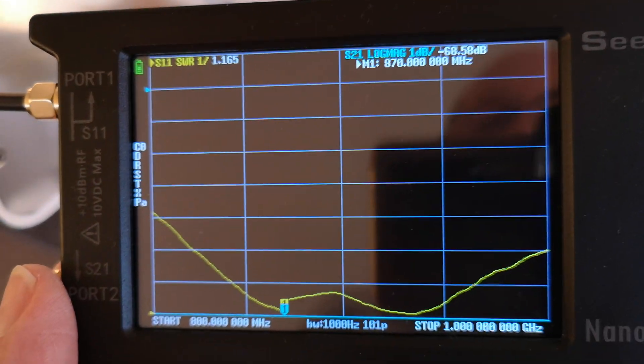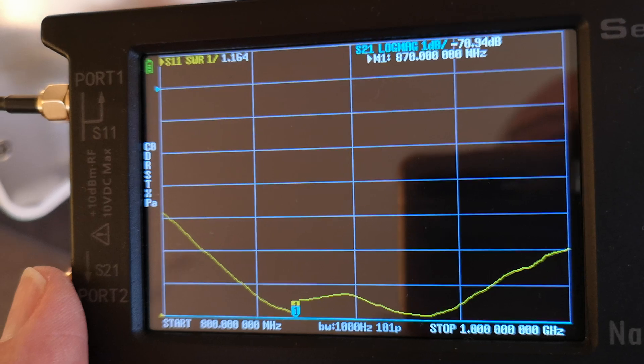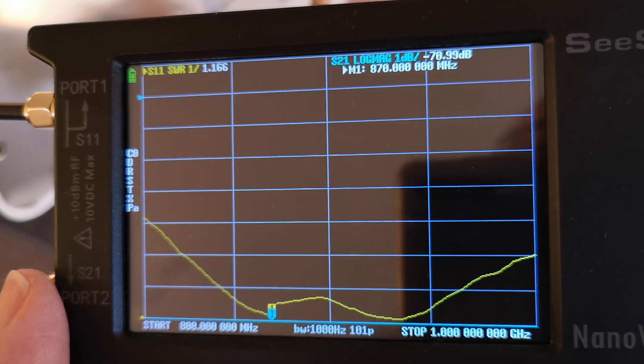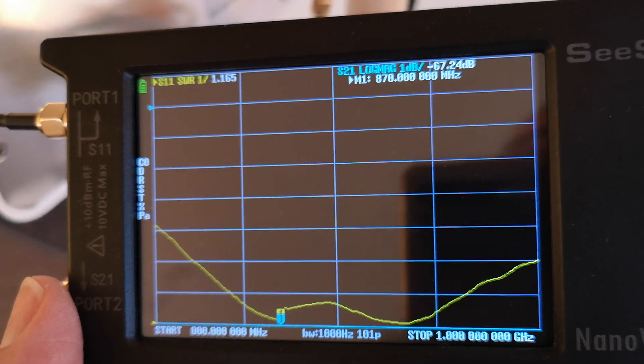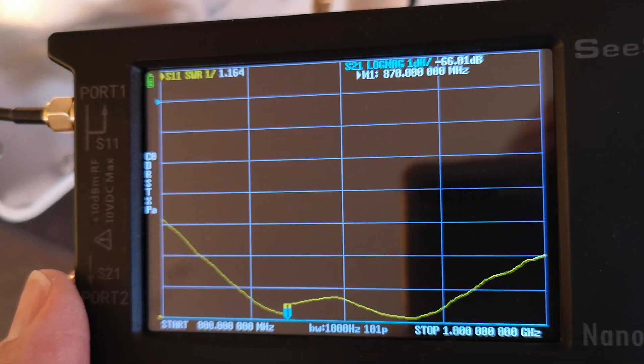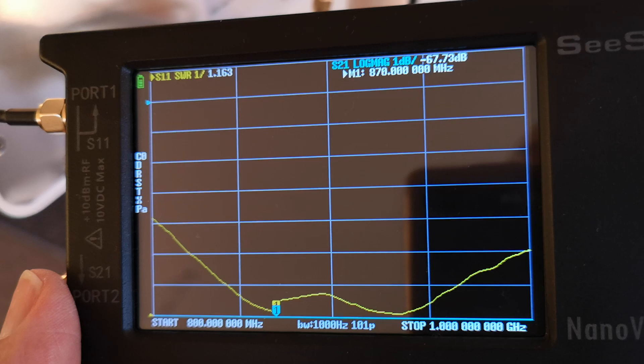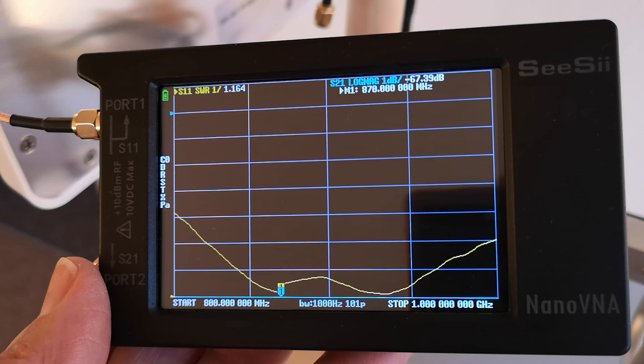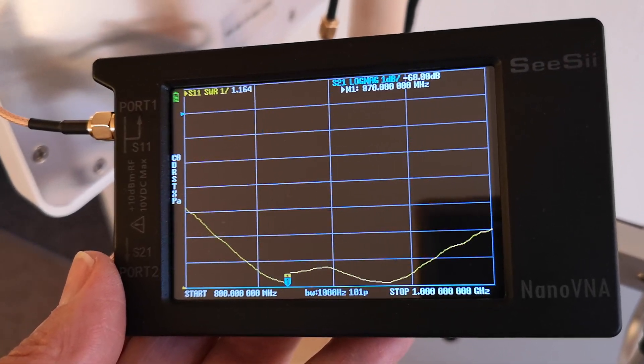The span on the VNA is from 800 MHz to 1 GHz. So at 870 you can see we've got 1.16 SWR that rises up and then goes down again, then goes up again. But it's very nicely tuned to 868, 870 MHz, which is exactly what we want.